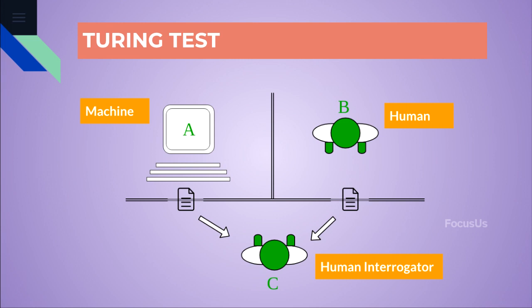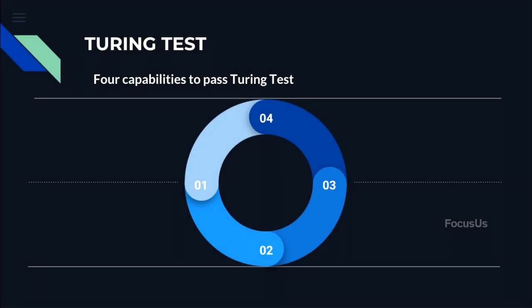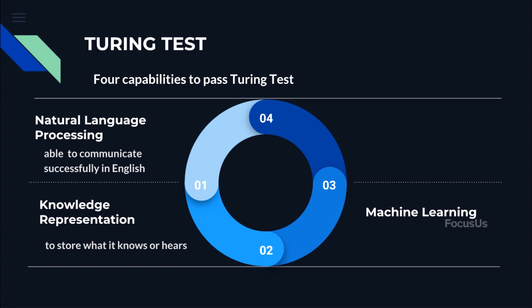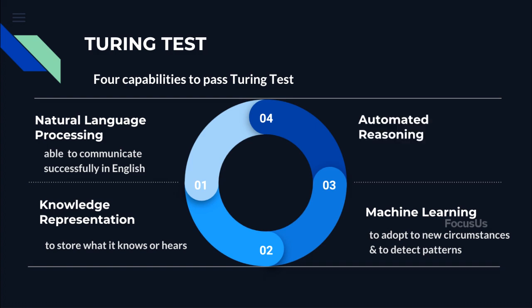To pass the Turing test, a machine or computer needs to possess four capabilities. The first is natural language processing — the machine should be able to communicate successfully in English. The second is knowledge representation — the machine should store what it knows or hears. Third is machine learning — the machine should adapt to new circumstances and detect and extrapolate patterns. Lastly, automated reasoning — the machine needs to use the stored information to answer questions and draw new conclusions.